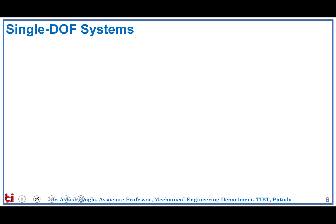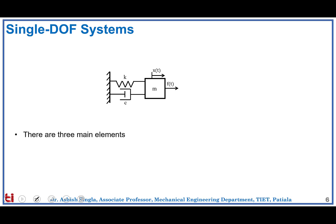Let's focus on single degree of freedom systems. The most common one is the spring-mass-damper system, where we have a body of mass M attached to a spring of stiffness K and a damper with damping coefficient C. The body is under the influence of external force F(t), causing it to oscillate, and the displacement from the mean position is called X. This system has three main elements.